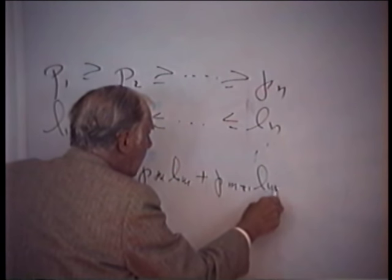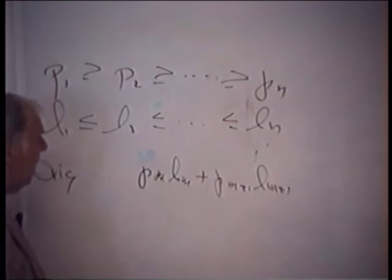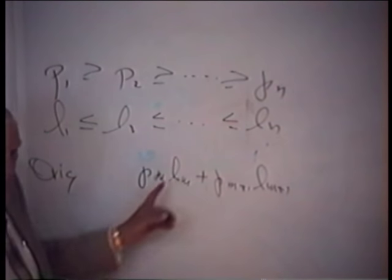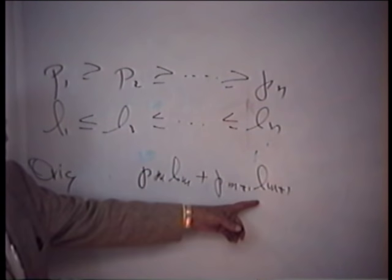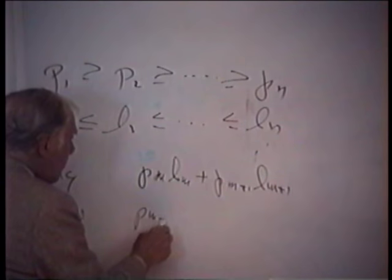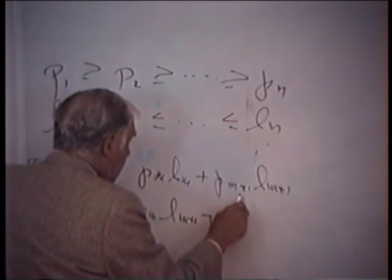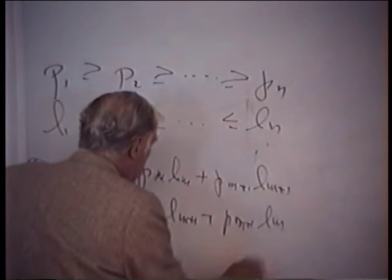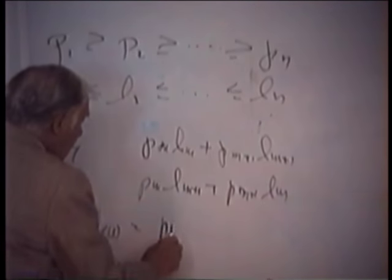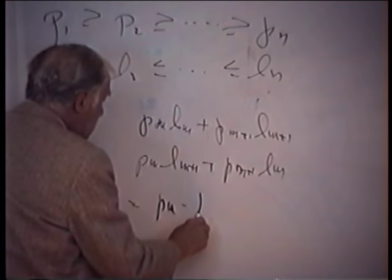Now, if I subtract minus nu, I will have pm minus pm plus 1, lm minus lm plus 1, I think. Let's see, there's a pm lm, there is a pm plus 1, lm plus 1 plus sign, and the other two cross terms are this.